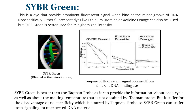SYBR Green is a dye that provides a prominent fluorescent signal when it binds to the minor groove of DNA non-specifically. Other fluorescent dyes like Ethidium Bromide or Acridium Orange can also be used, but SYBR Green is preferred for its higher signal intensity. SYBR Green is better than TaqMan probe as it can provide information about each cycle as well as about the melting temperature, which is not obtained by TaqMan probe.